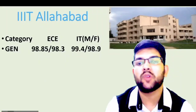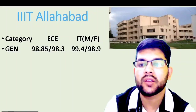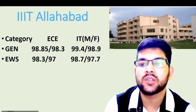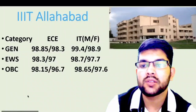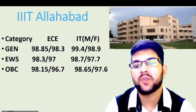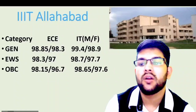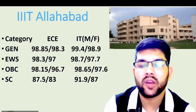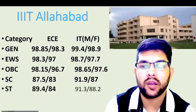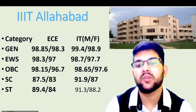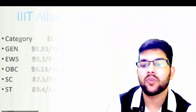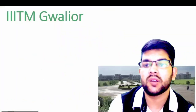Next is another top IIIT. Here is the information. For general category: 98.85 and 99.4. For EWS: 98.3 and 98.7. For OBC: 98.15 and 98.65. For SC: 87.5, 91, and 91.9, and for ST: 89.4 and 91.3 percentile.